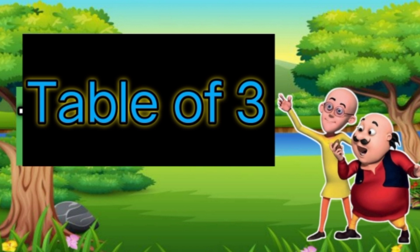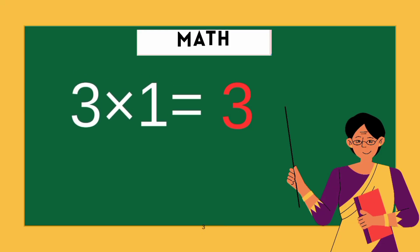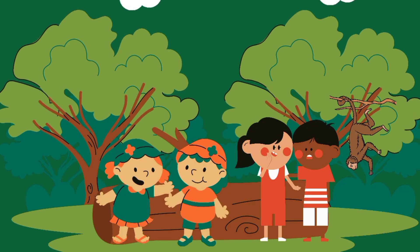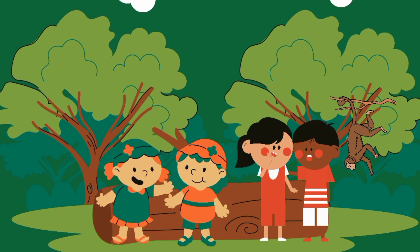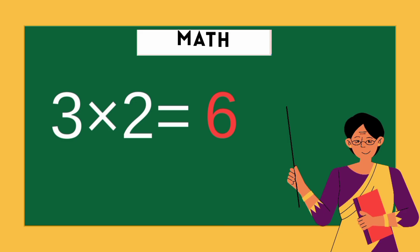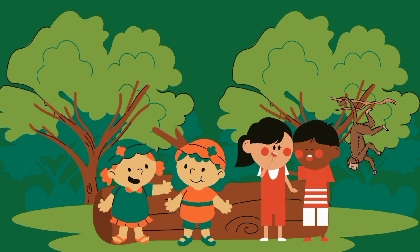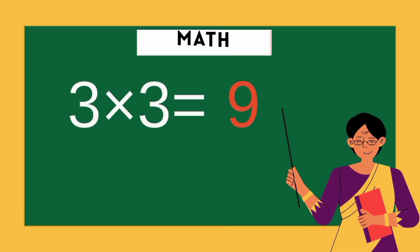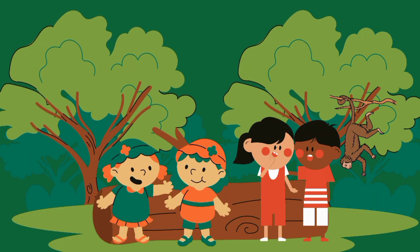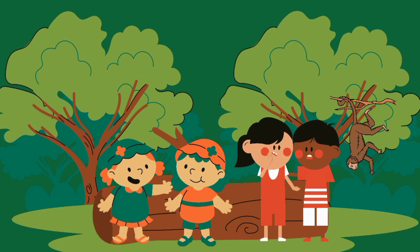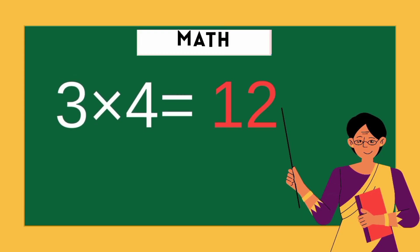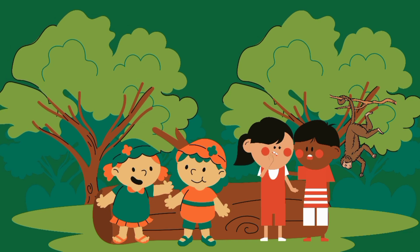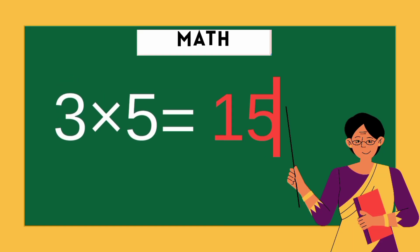Table of 3. 3 1s are 3, 3 1s are 3. 3 2s are 6, 3 2s are 6. 3 3s are 9, 3 3s are 9. 3 4s are 12, 3 4s are 12. 3 5s are 15.